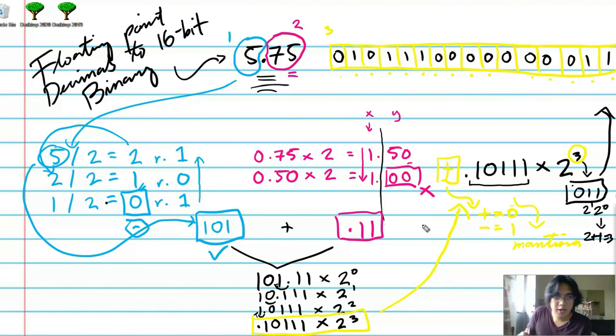Okay, so that's how you convert your floating point decimals to 16-bit binary. Thank you for watching. Again, consult the slides for the details of the theories behind the process that I've shown you.